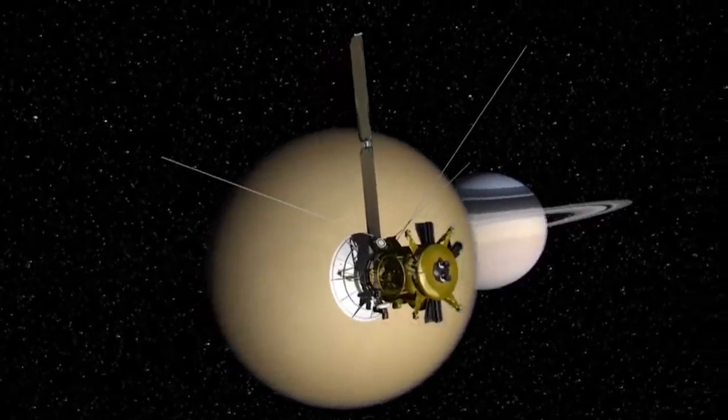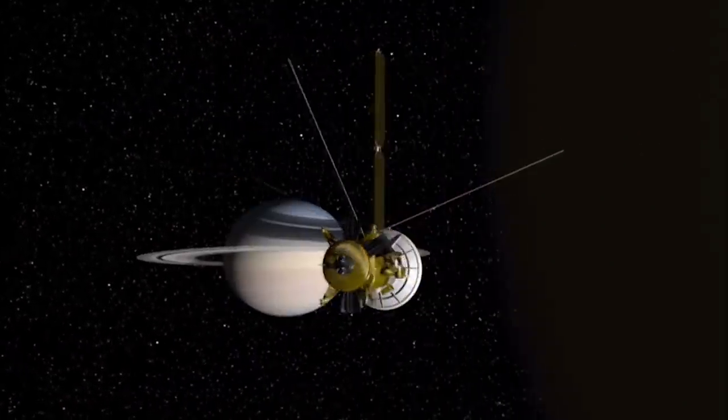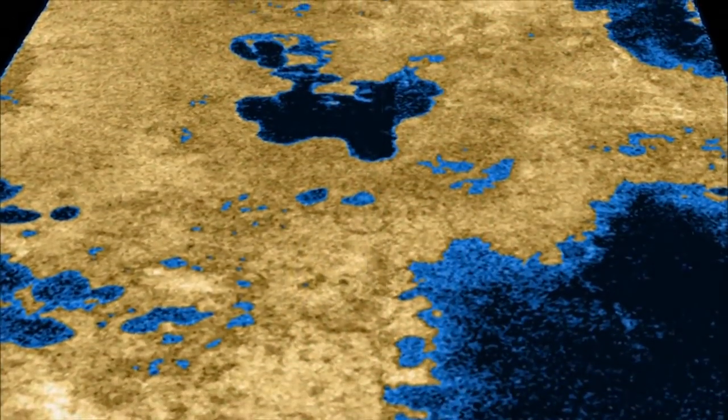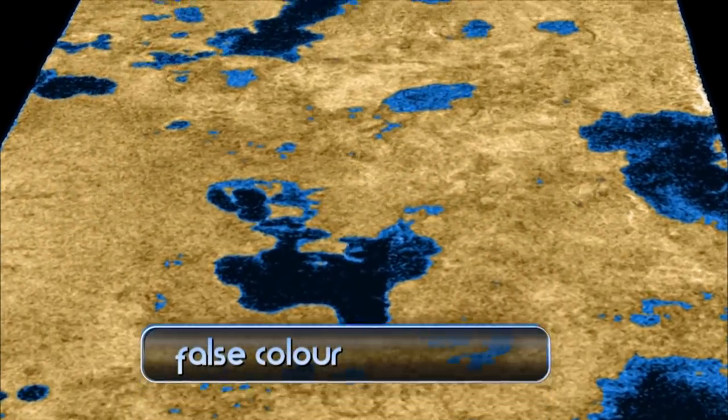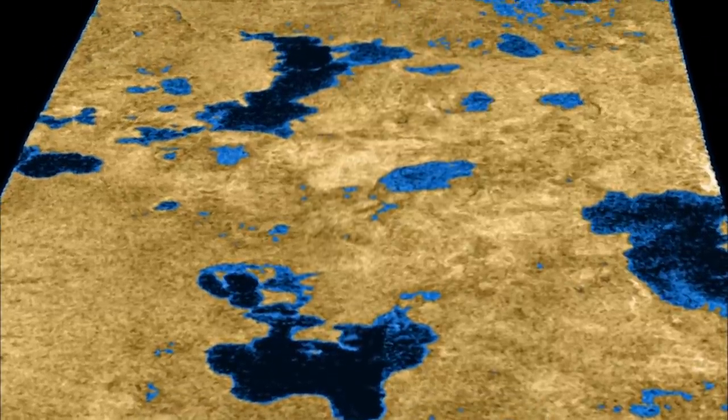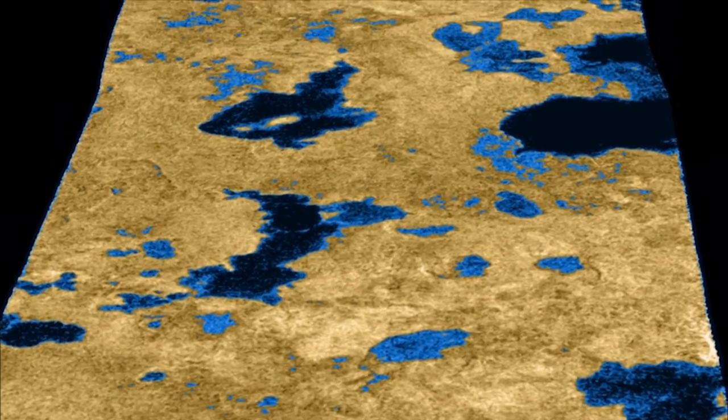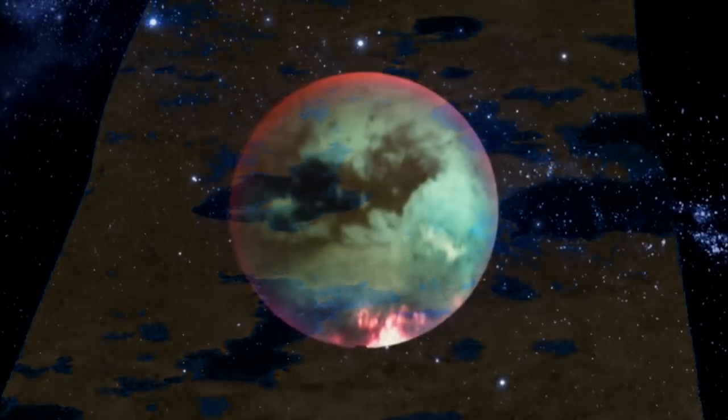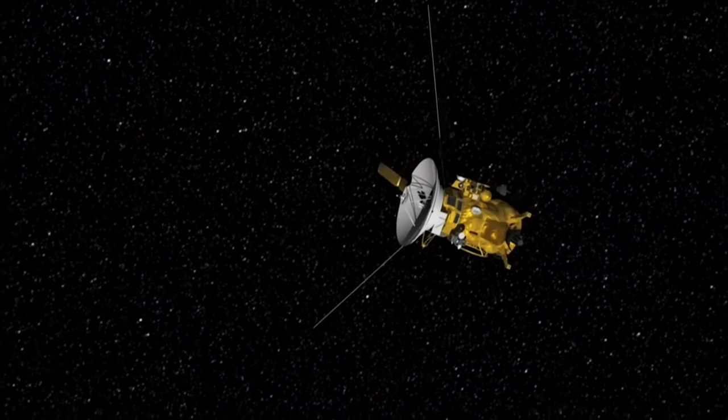After several more passes of Titan, Cassini's radar made an even more exciting discovery: a series of dark patches that were perfectly flat, resembling the surfaces of small lakes. Scientists were eager for more direct evidence of potential fluid flow on Titan. They found it in dramatic fashion.